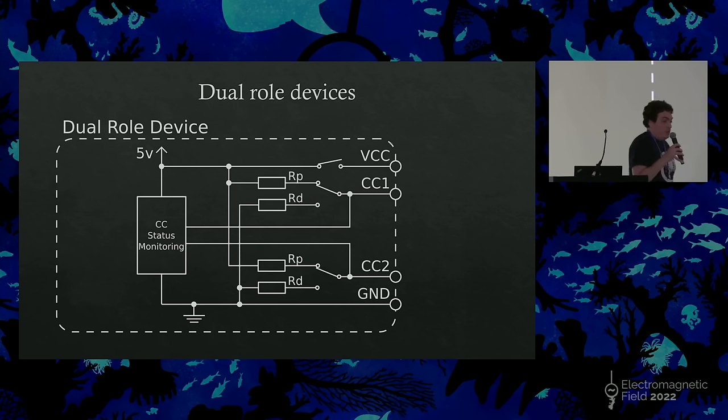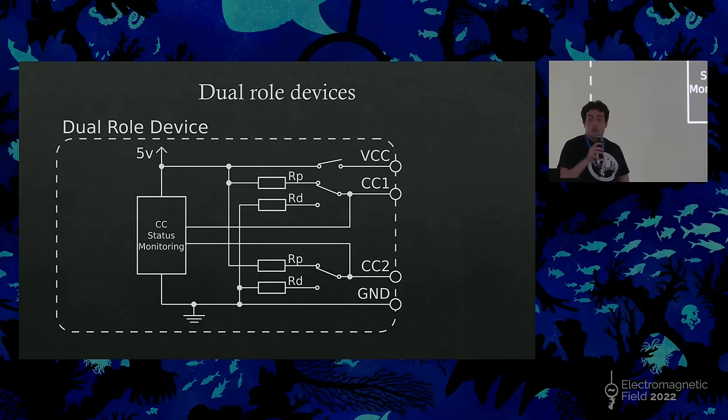So you may have noticed that some devices can be both host and client, such as your phones. This was done in the older methods with the ID pin on the micro and mini connectors, but for USB-C, the solution is, well, have both a pull-up and a pull-down resistor, and you switch between them. If you end up connecting two dual-role devices together, eventually they'll end up with a state where one is host and the other is client, and then they'll form their pairs correctly.